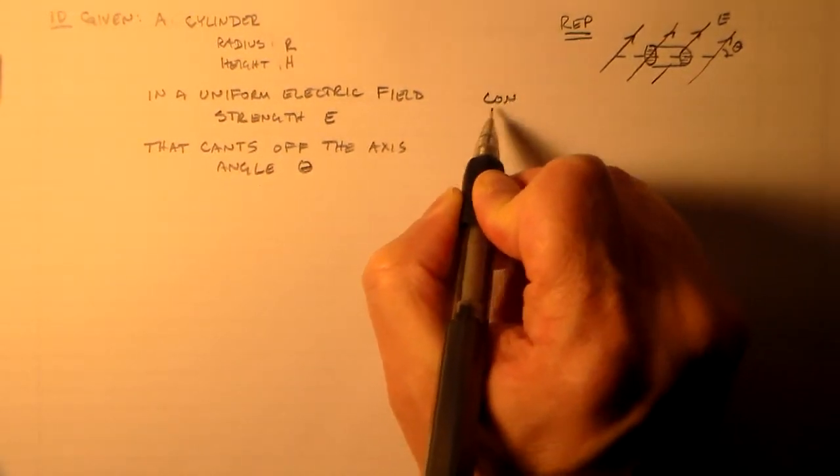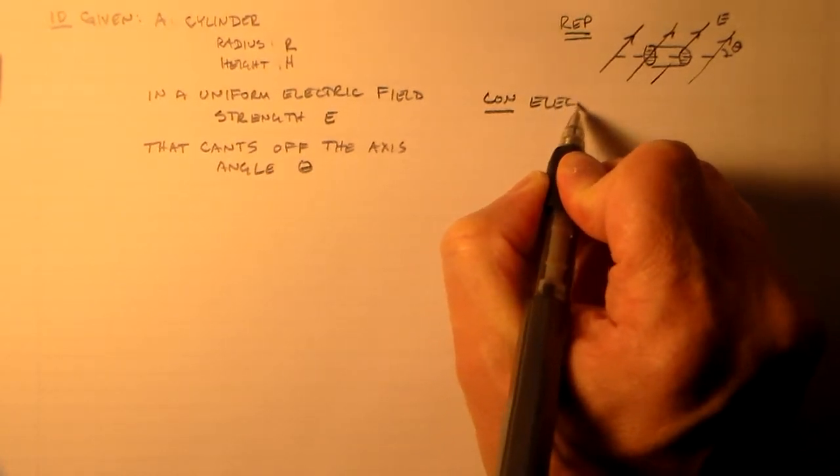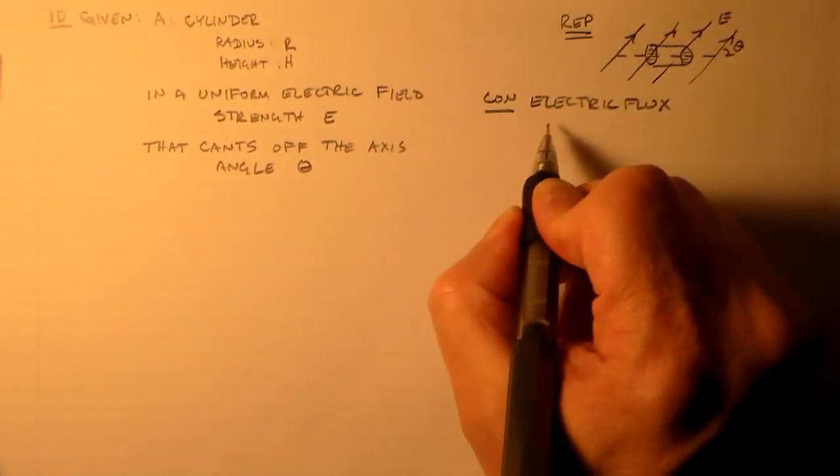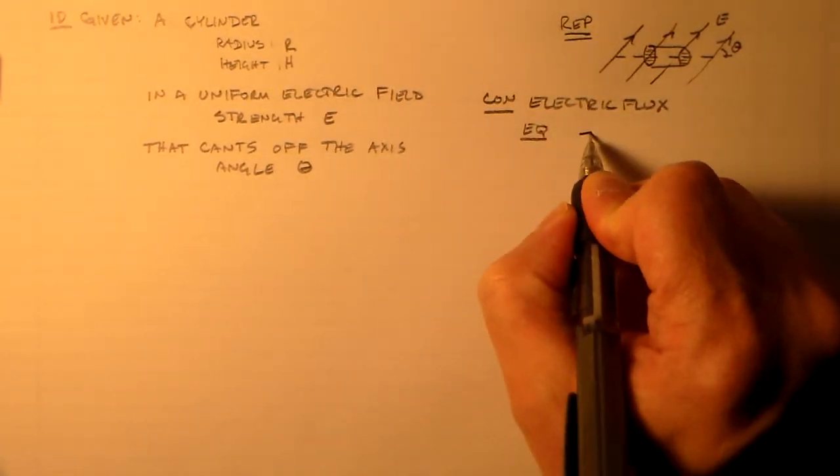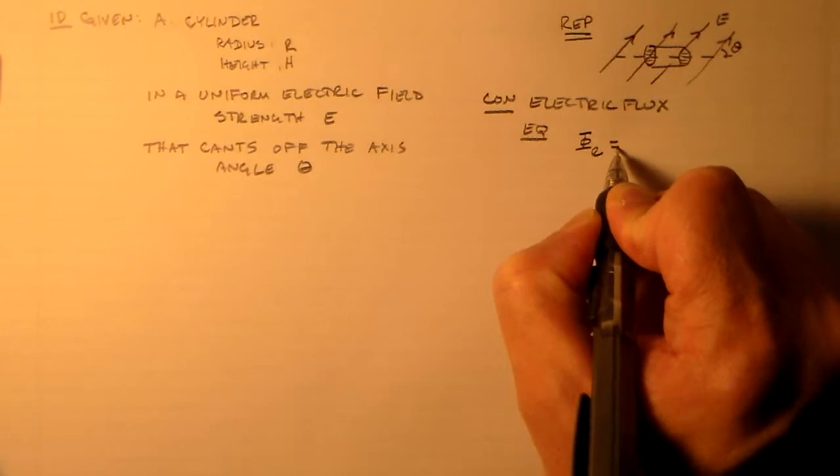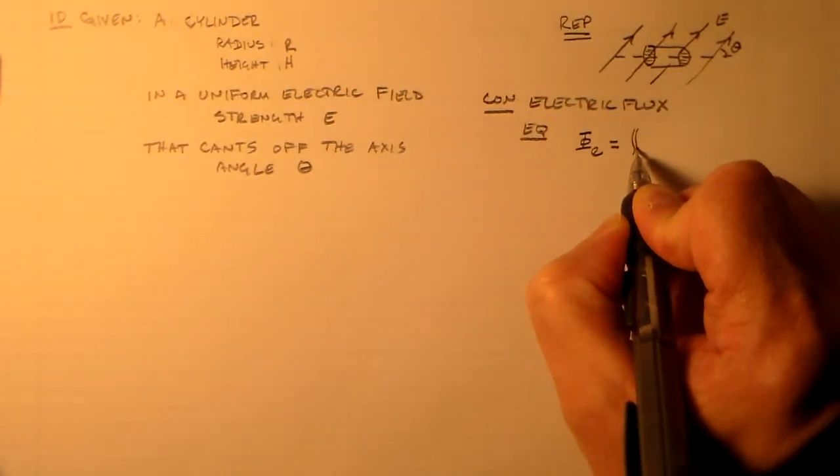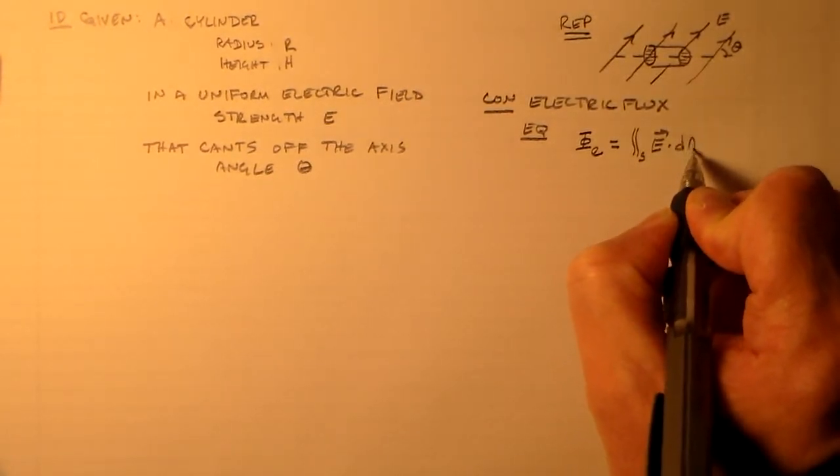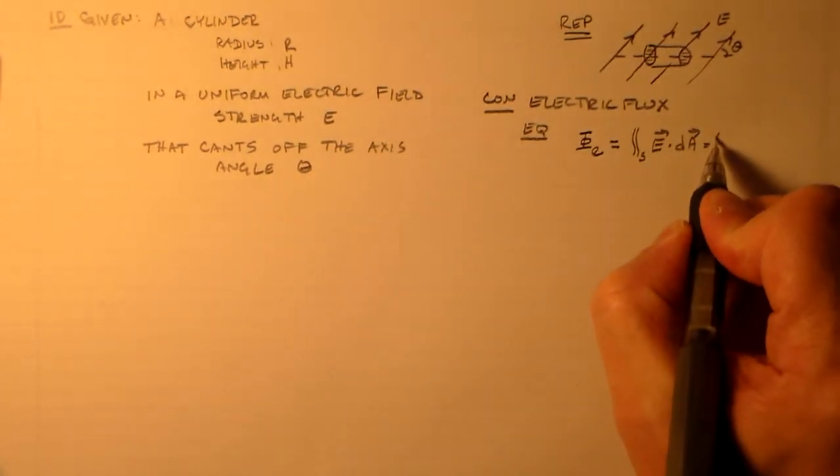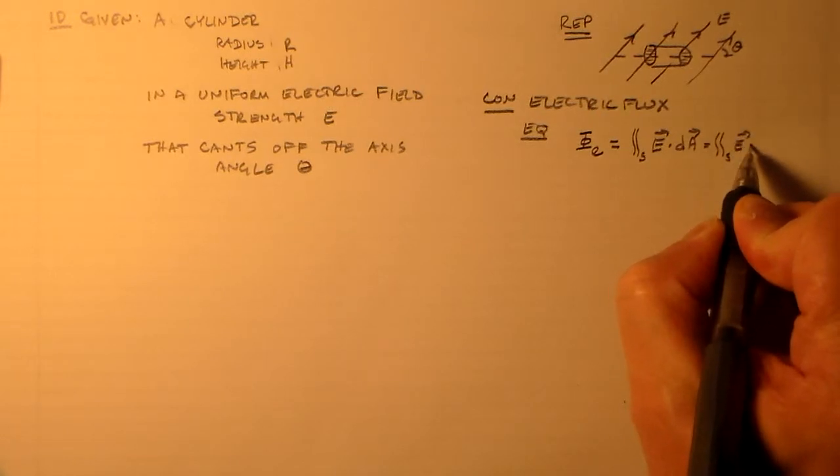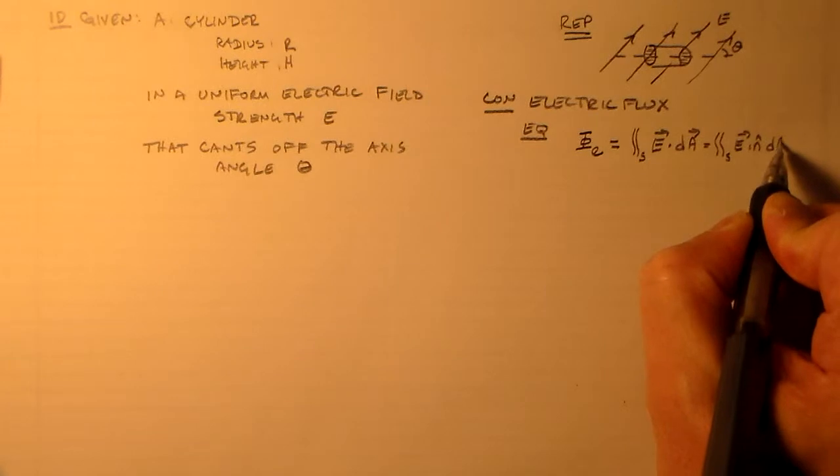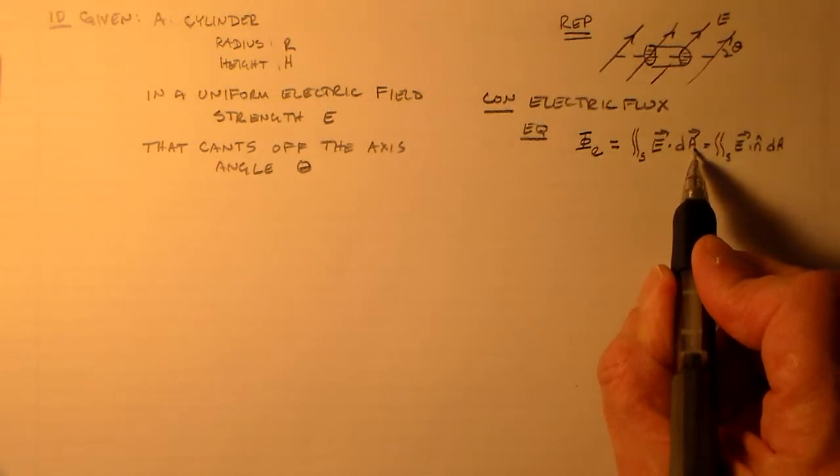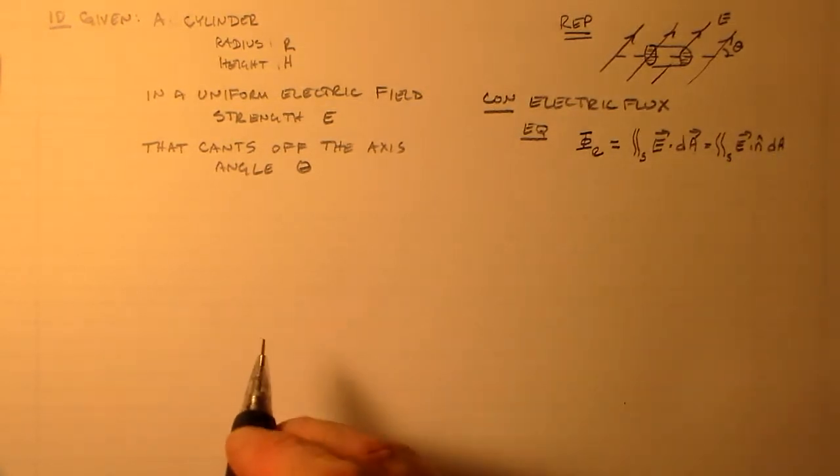Let's put it over here. The concept is the electric flux. And the equation for the flux looks something like this. Phi of E, the electric flux, is equal to the integral over some surface of E dot dA. And you remember that dA is just equal to the unit normal times the area element. Okay, so this is the vector area. This is what we mean by that.